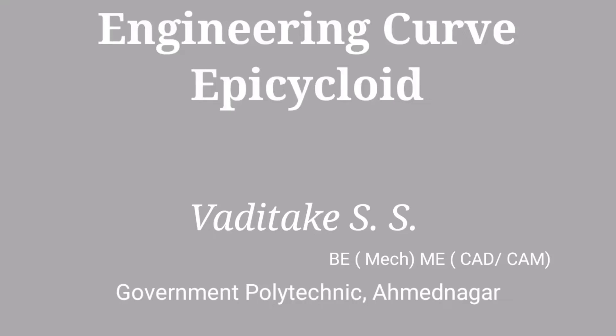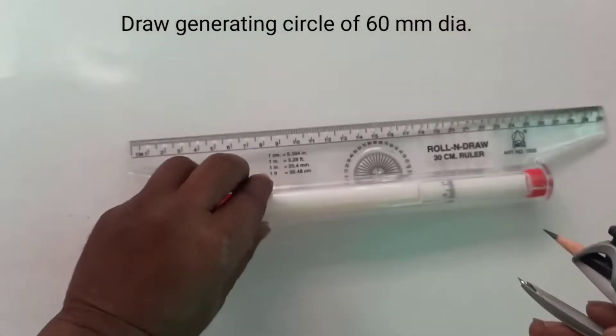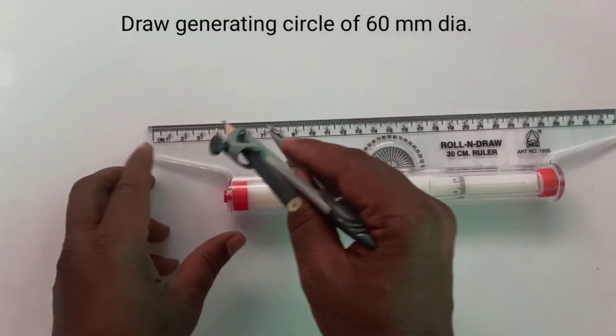Here we will learn how to draw an epicycloid. The problem statement is: draw an epicycloid with a rolling circle diameter of 60 millimeters and directing circle diameter of 160 millimeters. First, draw the generating circle of 60 millimeter diameter.